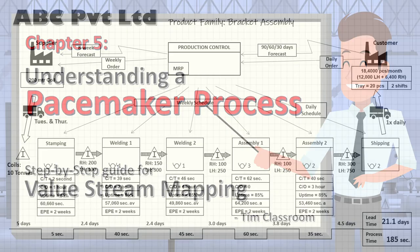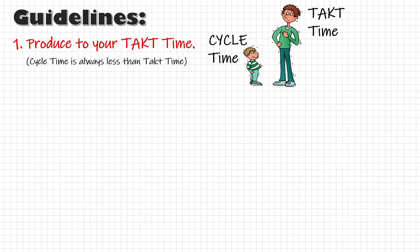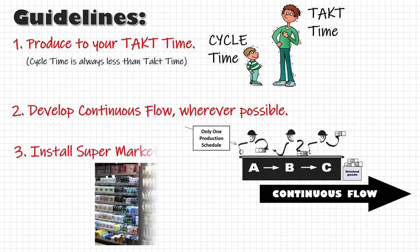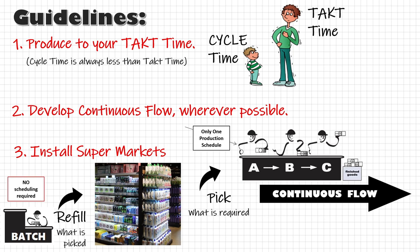Welcome back. So far we have made a VSM for our current state, and in the last lesson we went through a few lean guidelines: produce to your takt time; try to maintain continuous flow wherever possible so that we do not have to schedule production for each process section; and install a supermarket where continuous flow is not possible. Though supermarkets result in some WIP, they eliminate the need to schedule the supplying process. Using these three guidelines, we keep eliminating the need for scheduling until only one process is left which needs to be scheduled.